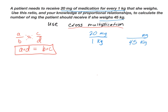Why is that helpful? It can help us solve for an unknown. We have an unknown amount here — let's call it X. We're just using a variable. I know that if 20 over 1 is equivalent to X over 45, I can solve for that unknown by multiplying 20 times 45, and setting that equal to 1 times X.